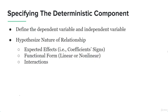Let's talk about model specification. In model specification, we're going to specify the deterministic component. Firstly, we define the dependent variable and the independent variable. Secondly, we're going to hypothesize the nature of the relationship — the expected effects will be measured by hypothesizing the nature of relationship, which depends on the coefficient signs telling us the nature of relationship as we have studied in correlation. The functional form of the equation will also give us information — for example, whether the function is linear or nonlinear will tell us a lot about the nature of the relationship.